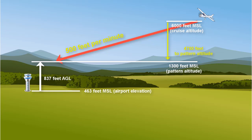Now we need to determine how many minutes it will take to reach traffic pattern altitude. We take 4700 feet and divide it by our descent rate of 500 feet per minute, which gives us 9.4 minutes.